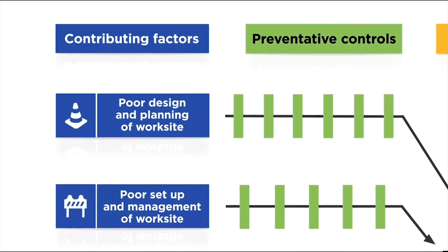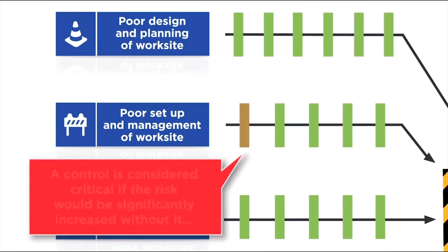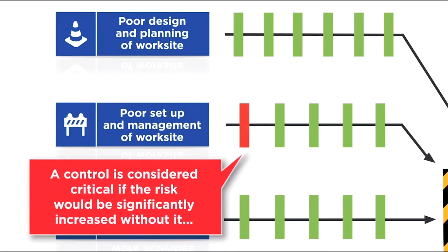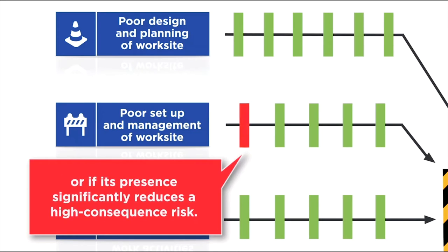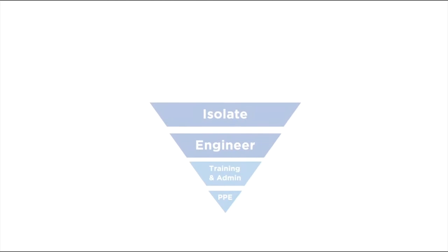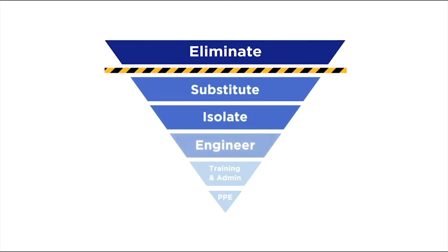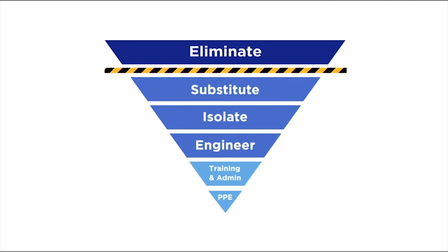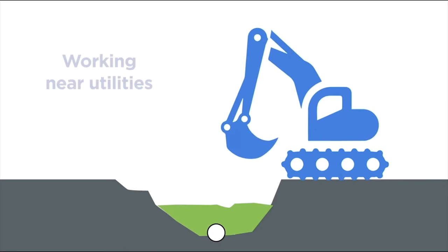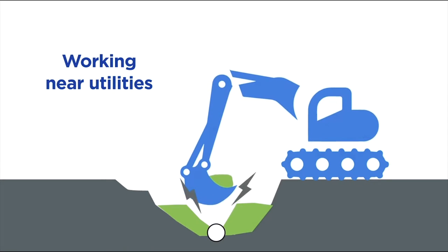Once all controls are identified on the bowtie we need to determine which controls are critical. A control is considered critical if the risk would be significantly increased without it, or if its presence significantly reduces a high consequence risk. Thinking about critical controls helps us focus on higher order controls as the primary means to keeping us safe. They also highlight areas where our assurance activities and efforts should be spent. Let's look at a bowtie used for working near utilities and the controls used to manage the risks.